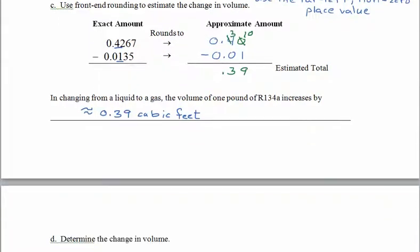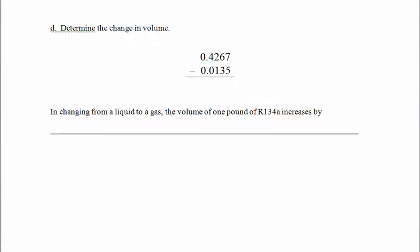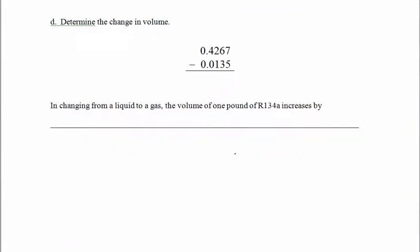Okay, let's come down just a little bit more. Determining the actual change in volume, right, that just means we're going to subtract like we normally would. You can do this without a calculator. Doesn't even require borrowing here. 7 minus 5 is 2. Ah, I'm having difficulty. You pause this, try it on your own, and then come back. Okay, let's give this another shot. 7 minus 5 is 2. 6 minus 3 is 3. 2 minus 1 is 1. 4 minus 0 is 4. Decimal point where it belongs. Bring down the 0 so we can see our decimal point. So, in changing from a liquid to a gas, the volume of 1 pound of R134a increased by? Exactly. 0.4132 cubic feet.